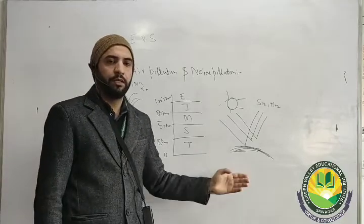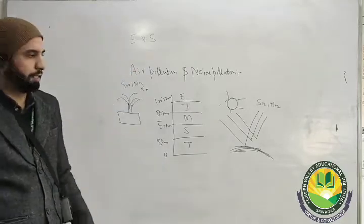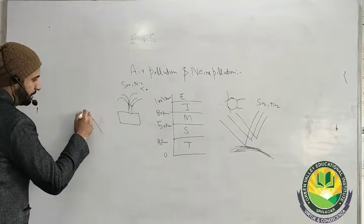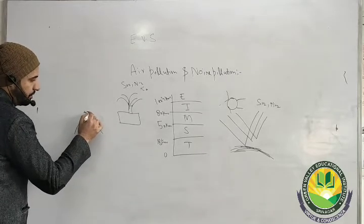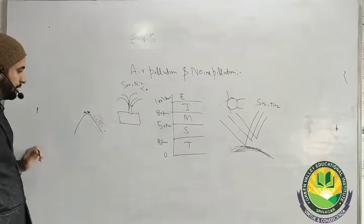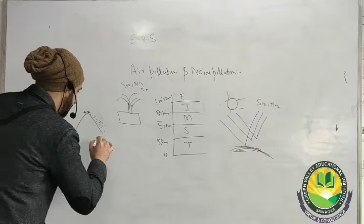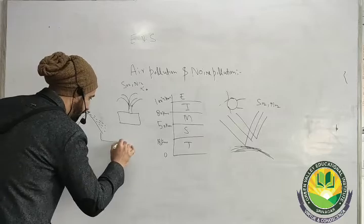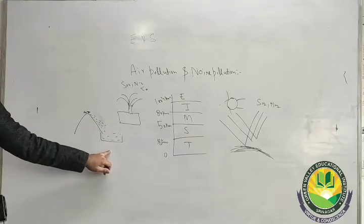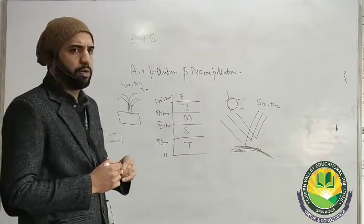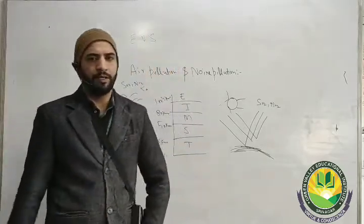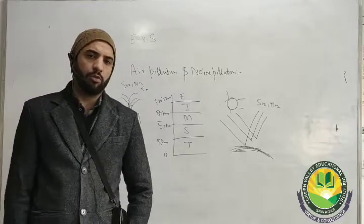One effect of global warming is melting of glaciers. When glaciers melt, more water flows out, causing sea levels to rise. When sea levels rise, floods occur. For example, the 2014 floods in Kashmir were also one of the causes attributed to global warming.